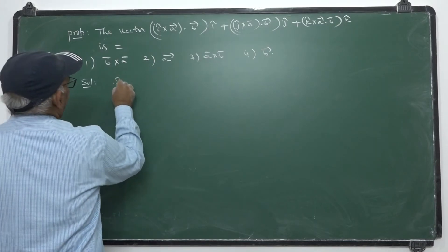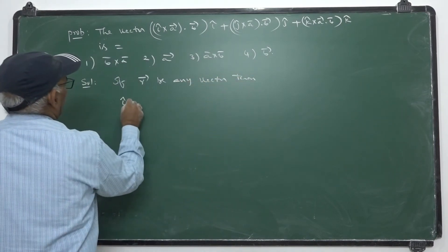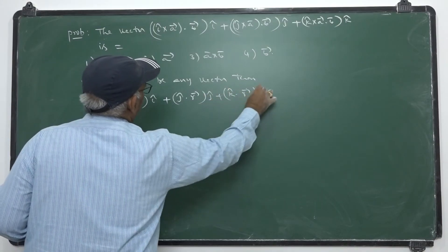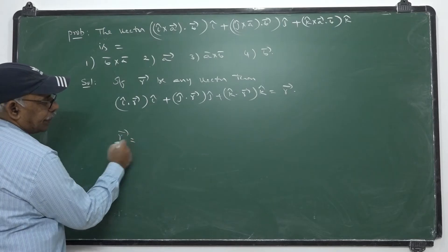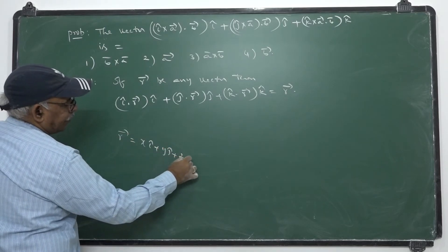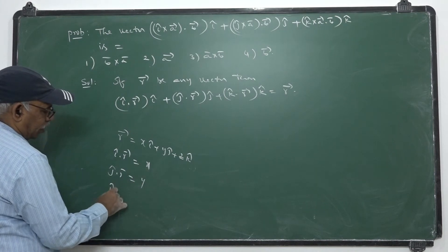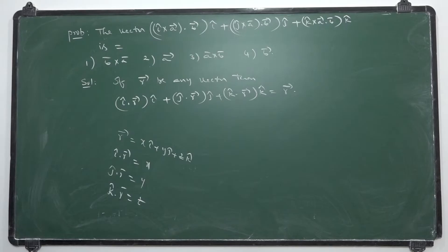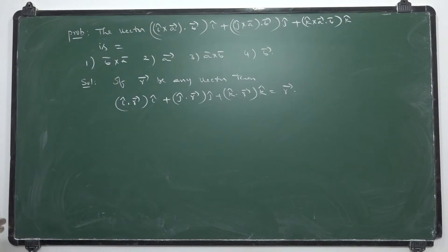If r̄ is any vector, then ī·r̄·ī + j̄·r̄·j̄ + k̄·r̄·k̄ is always equal to r̄. This is an important relation. Because ī·r̄ is just x, j̄·r̄ is y, k̄·r̄ is z, and again we get r̄. That is one important point.